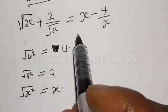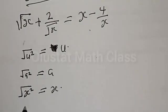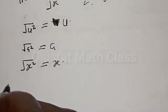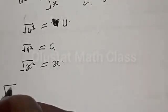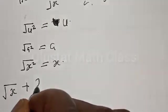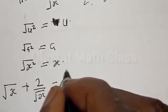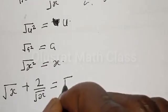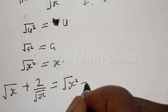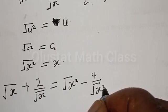Therefore, anywhere you see x from this given equation, substitute with square root of a squared. Then our equation becomes: square root of s plus 2 divided by square root of s equals square root of a squared minus 4 divided by square root of a squared.